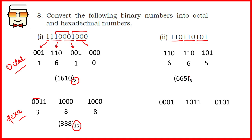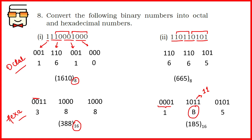For the hexadecimal conversion, we create groups of 4 and get 3 groups again, needing to add 3 zeros at the beginning. The groups are 0101 at the rightmost end, then 1011, then 0001. Writing the corresponding hexadecimal values, since the 4-digit binary group 1011 corresponds to the value 11, we write the hexadecimal letter B. So the answer is 1B5.